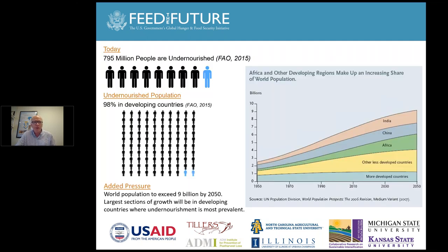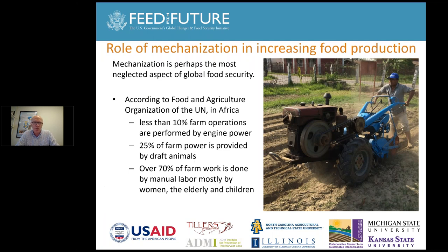Some background: we have a large portion of our global population that is undernourished — about one in nine people. Of those undernourished people, 98% reside in developing countries based on FAO statistics. With the increasing world population, the issues of food production and undernourishment become critical. You can see on the right-hand side of the graph the expansion in population across all countries, including the less developed countries.